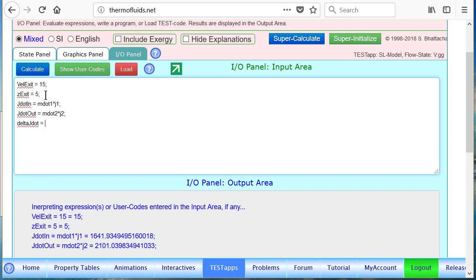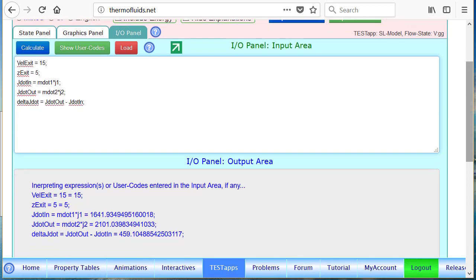So, the difference delta j dot will be what? Change is j dot out minus j dot in. We expect that to be positive because there is shaft work going into the system. And so, you can see that it has been calculated to be 459. So, this is our answer here.